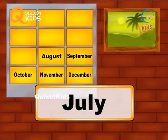July. July is the seventh month of the year. It has 31 days.